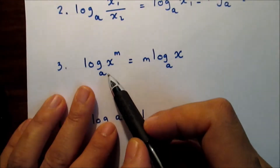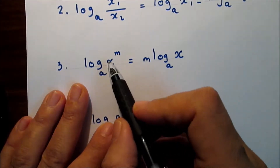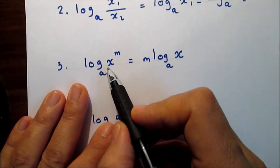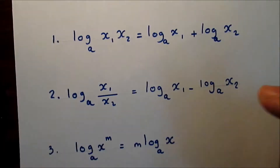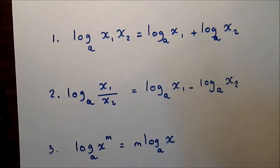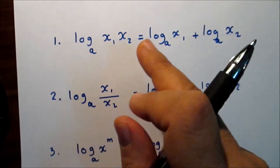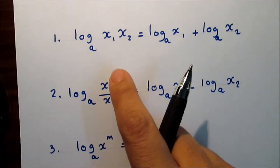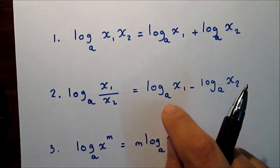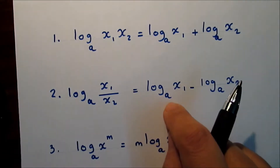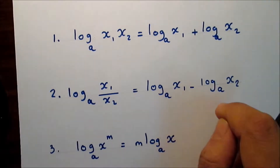The third law, or the exponent law: an exponent on the number inside the log can be moved outside the log as multiplication. These rules work only if the bases are the same, and for all the above rules the x values are only positive numbers not equal to zero, and the bases are all positive numbers not equal to zero.